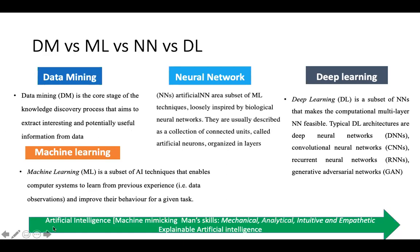Artificial intelligence involves machines mimicking human skills including mechanical, analytical, intuitive, and empathetic abilities. For a human being, certain things are very easy because they are inbuilt in our biological process. A person can identify whether an object is a dog or cat, or whether someone is male or female — we never think it's complicated because it's a default ability we have through our sensing activities.